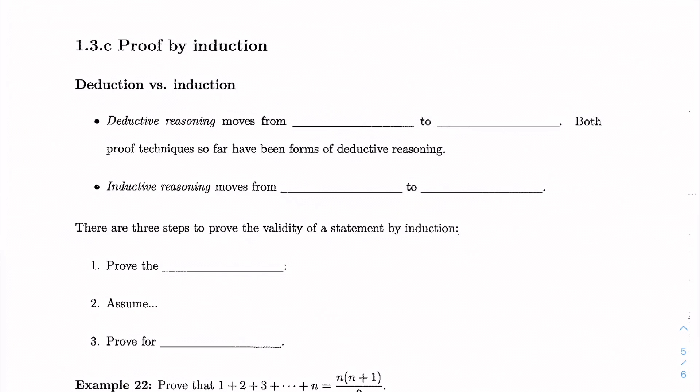Deductive reasoning moves from a general case to a specific case. Everything we've done up to this point is deductive reasoning. We started with a statement and applied general theorems that we know to get to a specific conclusion.